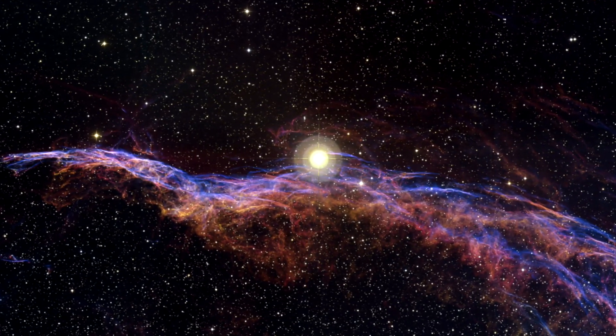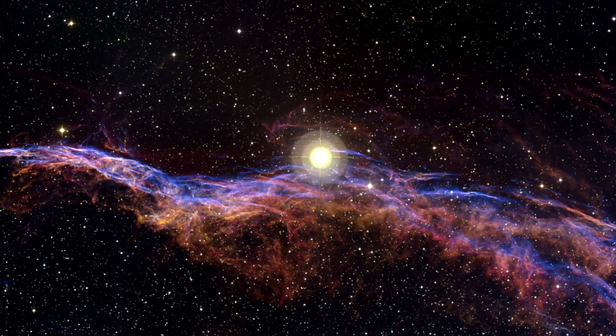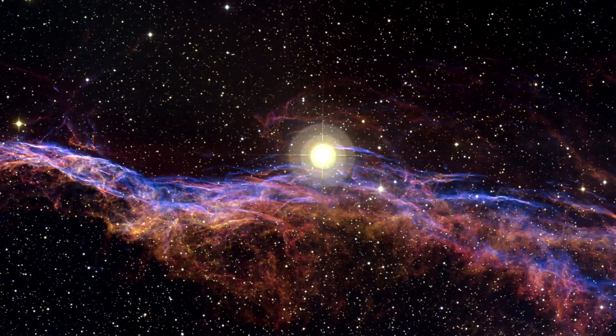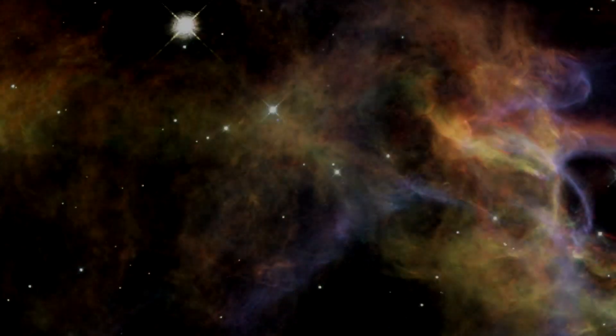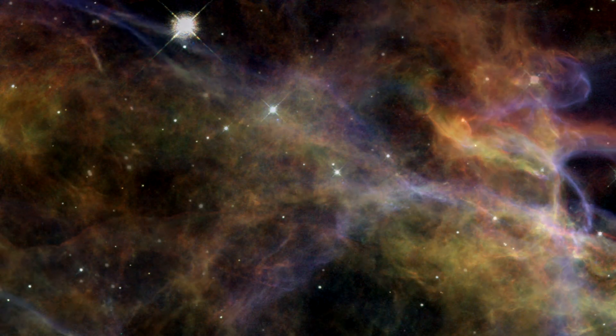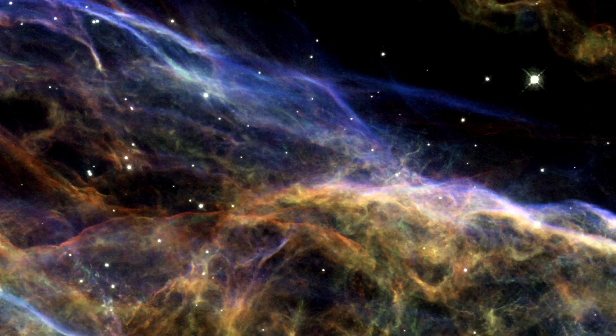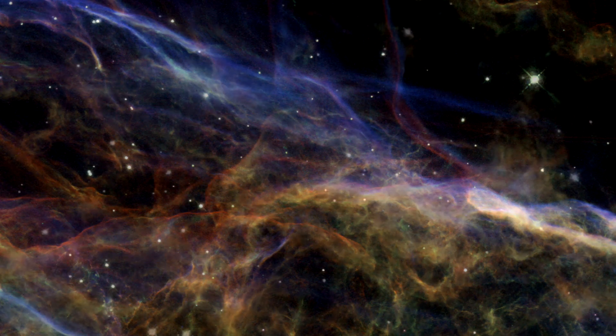The NASA ESA Hubble Space Telescope has recently revealed magnificent sections of the Veil Nebula, the shattered remains of a supernova that exploded some 5 to 10,000 years ago. The new Hubble images provide beautiful views of the delicate, wispy structure resulting from this cosmic cataclysm.